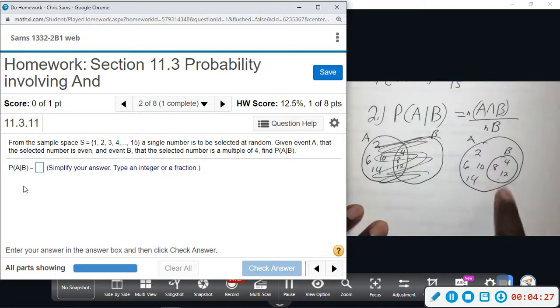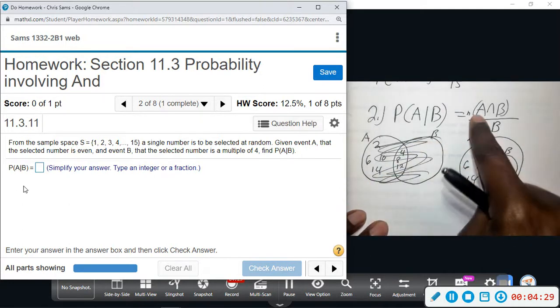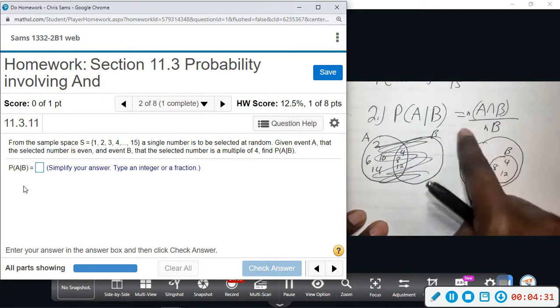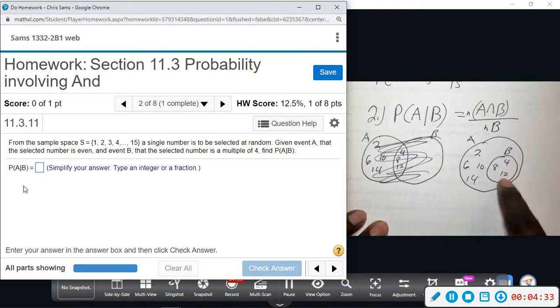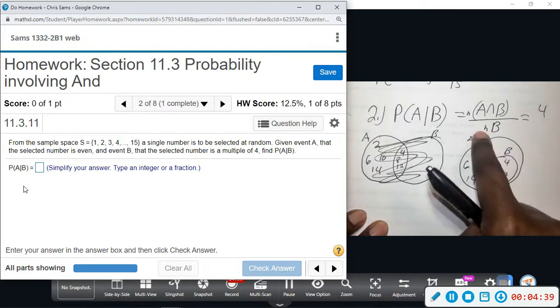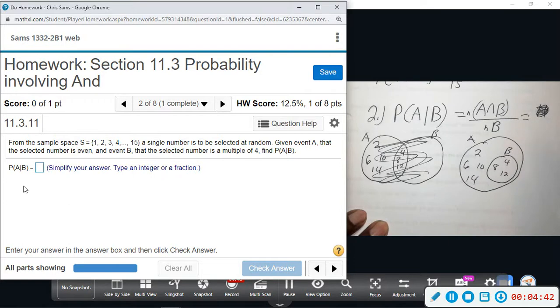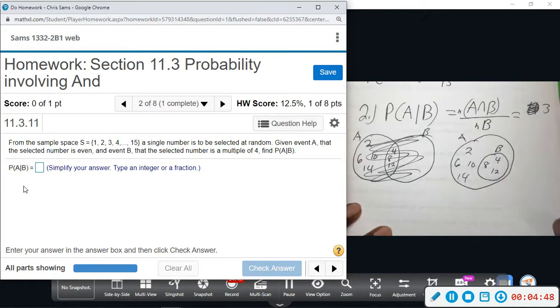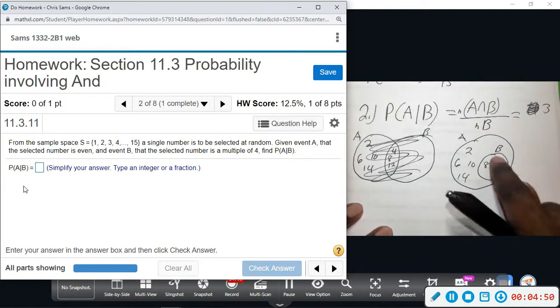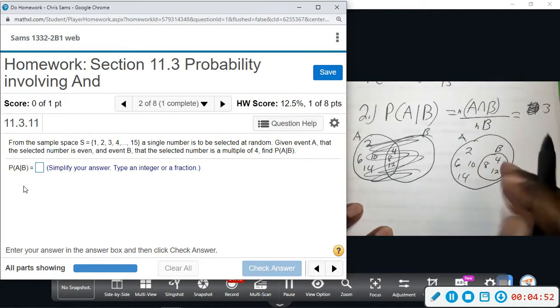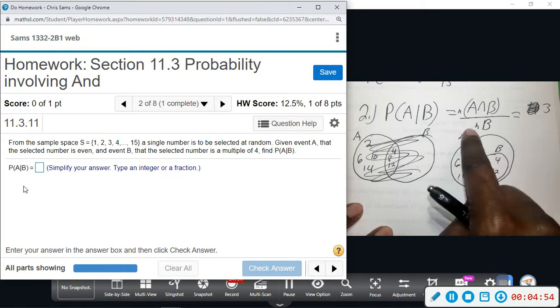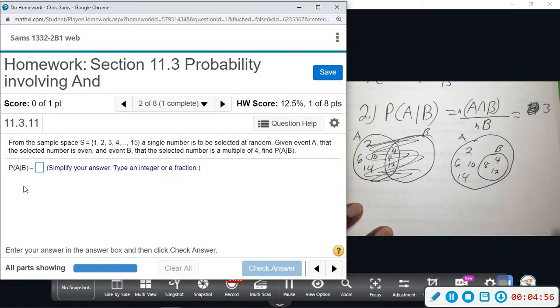So the number of elements in A and B, the intersection, would be one, two, three: the 4, 8, 12. The number of elements, sorry, why did I write four? There's only three, three numbers: the 4, 8, and 12. So I think I said four, that's why I was writing the four. Number of elements in A and B, the intersection, is three. The number of elements in the set B by itself is three.